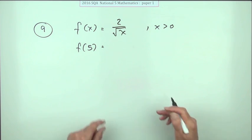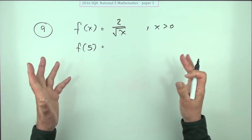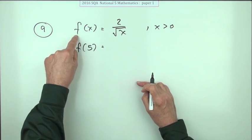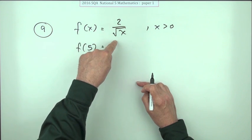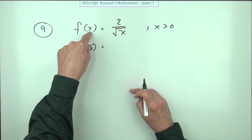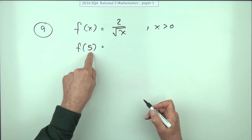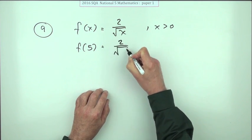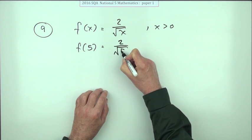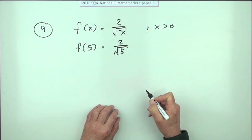And it says what does f of five mean? Well here's the clue. This function does this to anything you feed it: put an x into it and it'll do two over the square root of that. Put a five into it and it'll do two over the square root of that five. So that's what you've got to rationalize.